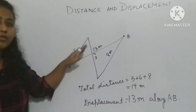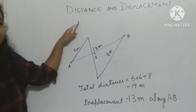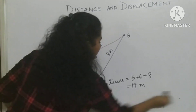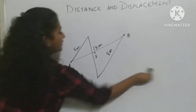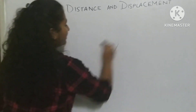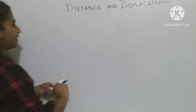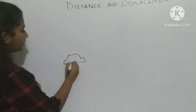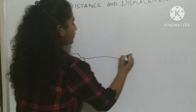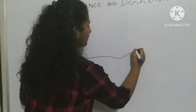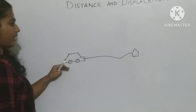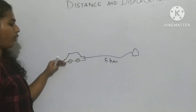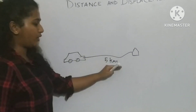Now it has become clear what is the difference between distance and displacement. Let's take another example. A car — I am going to a shop. I travel a distance of 5 kilometers from my home to the shop.